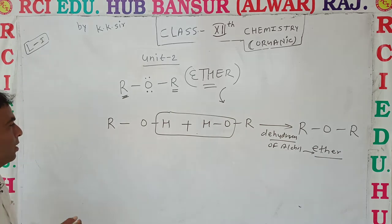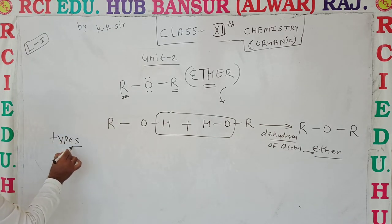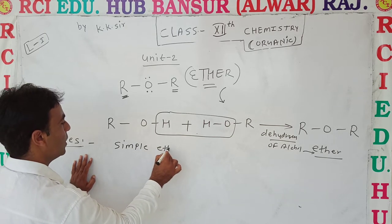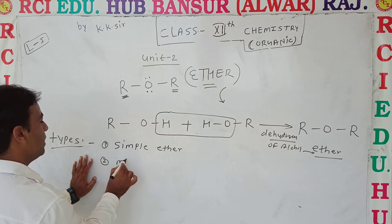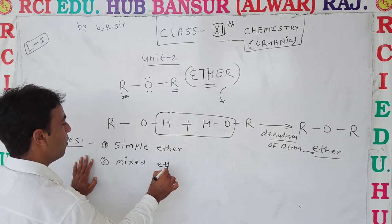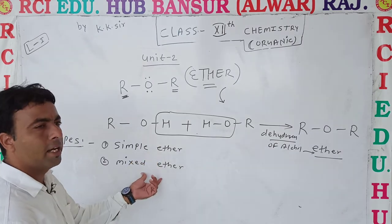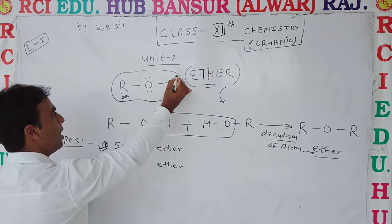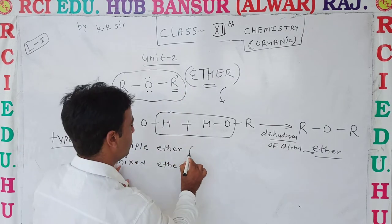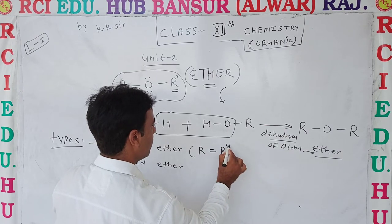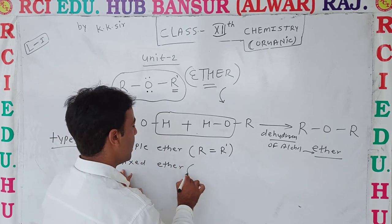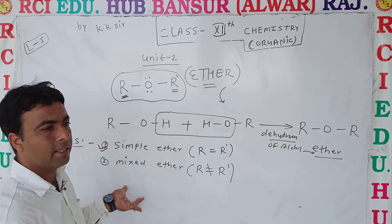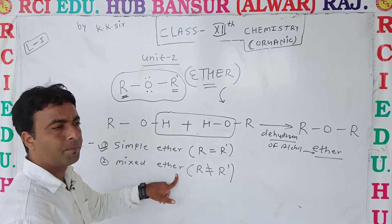Dehydration of alcohol gives ether. The R group decides the type of ether. There are two types: first is simple ether, second is mixed ether. Very easy to identify these types. In the structure R-O-R', if R equals R', then that is called simple ether. If R is not equal to R', then that is called mixed ether.